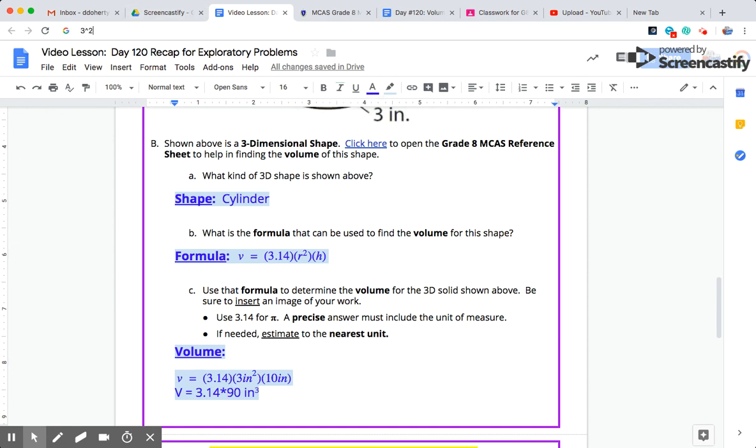3 squared times 10, the height, times pi, which is 3.14. Our calculator should be showing 282.6 for an answer for volume. V equals 282.6. And that's cubic inches here.